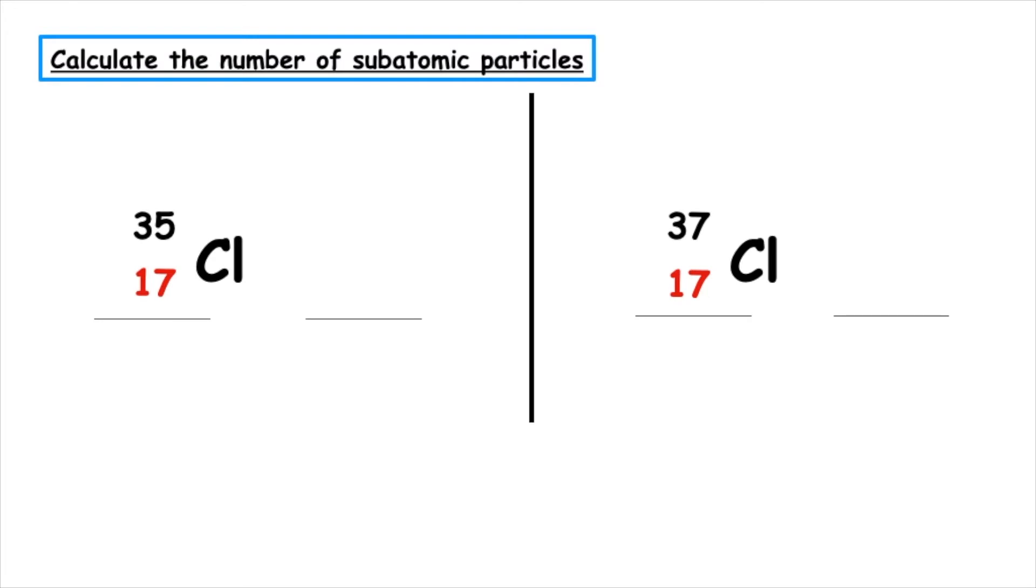Let's calculate the number of subatomic particles in these two nucleic notations of chlorine atoms. We can see that they have the atomic number 17, so that means they've got 17 protons which are positively charged.